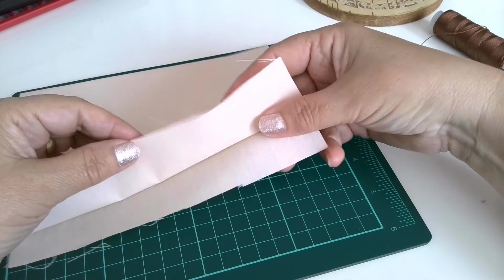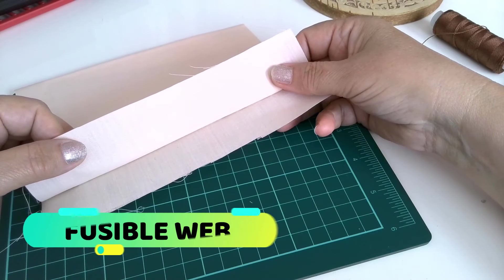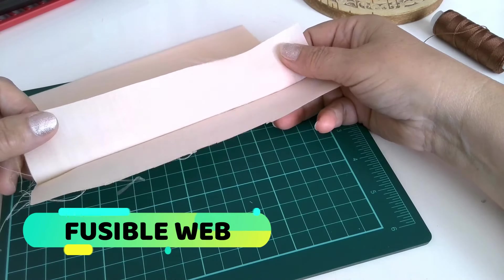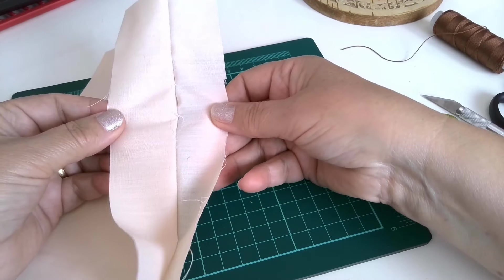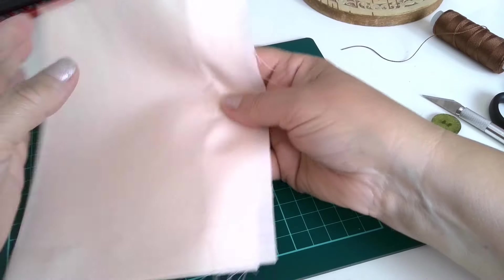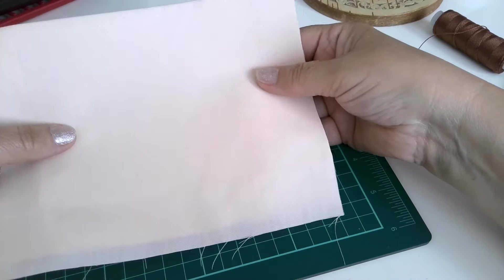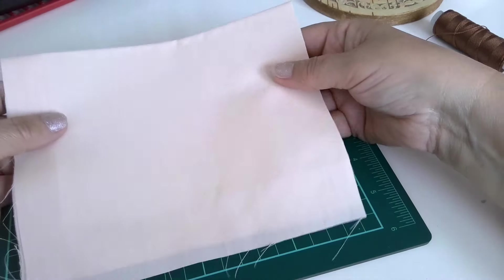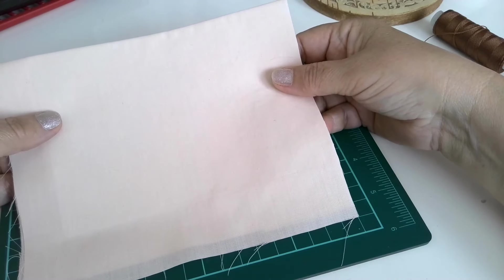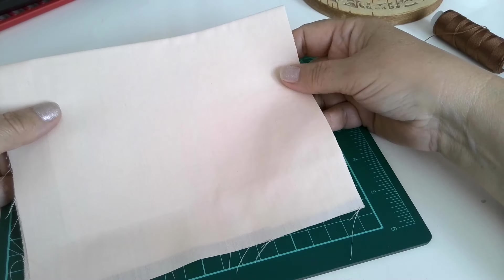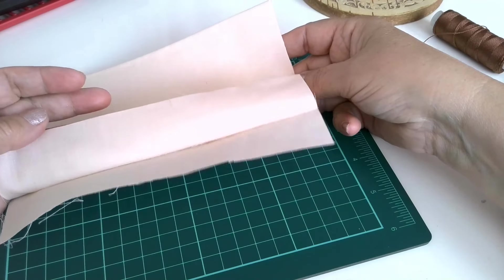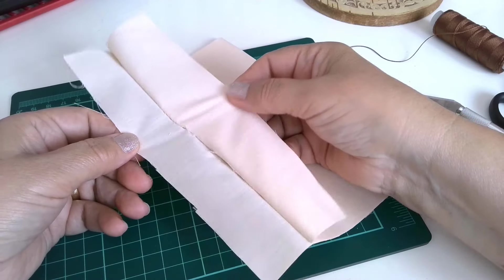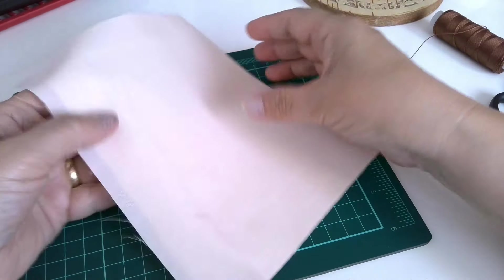First of all I am using fusible web, double sided fusible interfacing so I can glue two layers of fabric together so they don't shift. We need to use interfacing anyway when we are making buttonholes so why not use fusible web and two layers of fabric will be connected permanently.